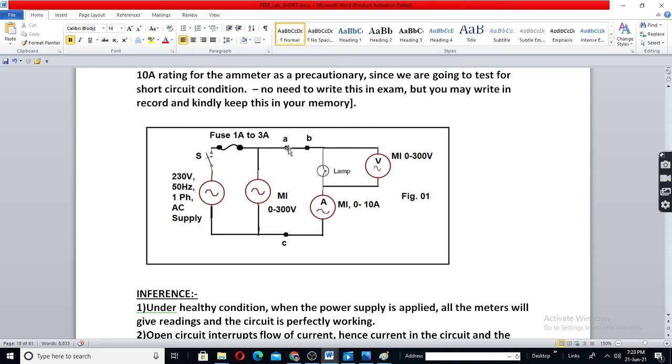But if you short between A and this path, high current will flow like this and ammeter will get destroyed. That is why I have given here C. If C is placed here, ammeter is under risk.